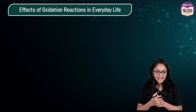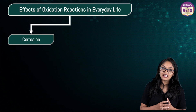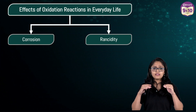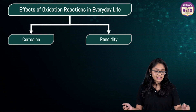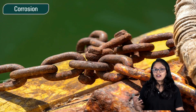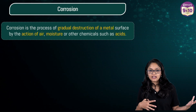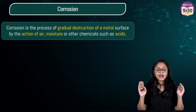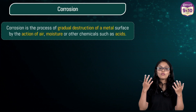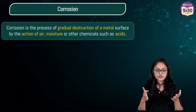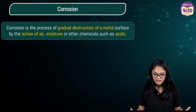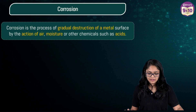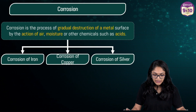Now let us look at the effects of oxidation reactions in our daily life. The very first one is corrosion, and the second one is rancidity. These two are the main and very common redox reactions that you see in everyday life. Corrosion — it might be iron or some other metals. Corrosion is the process of gradual destruction of a metal surface by the action of air (oxygen), moisture, or other chemicals such as acids.